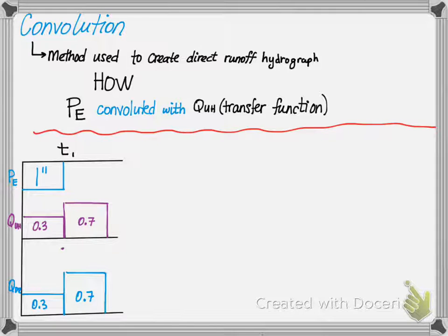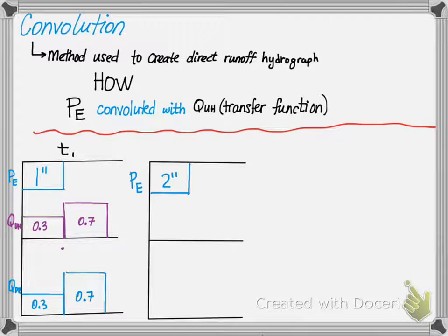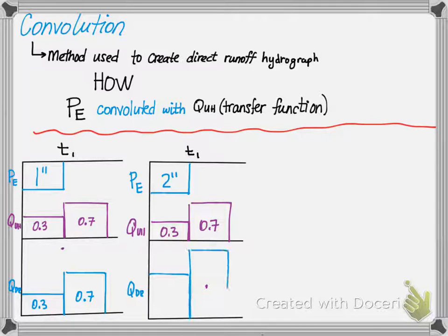Let's try this again. Imagine that our excess precipitation this time for a time step of T1 is two inches. You're given a unit hydrograph the same as before of 0.3 and 0.7. This time when we convolute the unit hydrograph with the excess precipitation, we take two inches, multiply it by 0.3 and get 0.6. Two inches times 0.7 gives us 1.4.